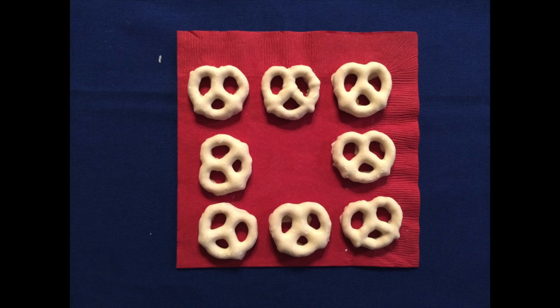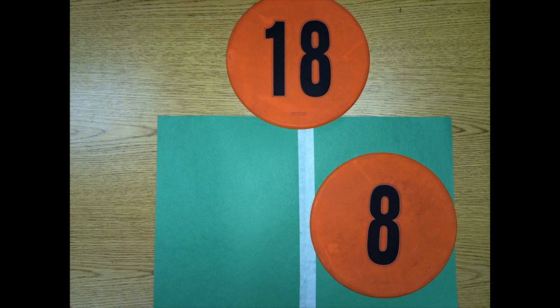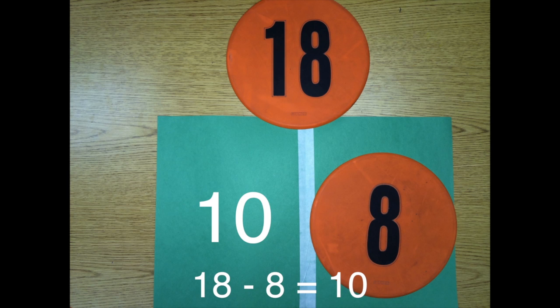Other times, you know a whole and one part, but one of the parts is missing. For example, Mrs. Gary knew she had eighteen yogurt-dipped pretzels when she left the table, and only had eight left on the napkin when she returned. She could use this part-part-whole mat to solve. Mrs. Gary had a whole of eighteen pretzels. She had a missing part and was left with only eight. Now she'll have to work backwards to figure out how many are missing. She'll start with the whole of eighteen and subtract the part she knows. Eighteen minus eight equals ten. The missing part is ten.